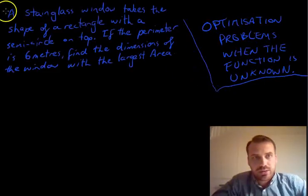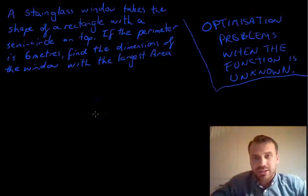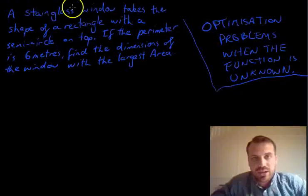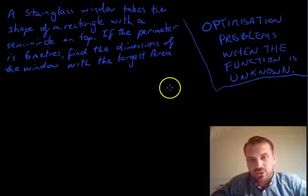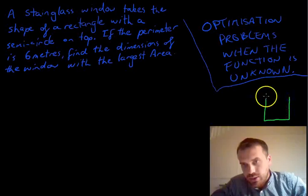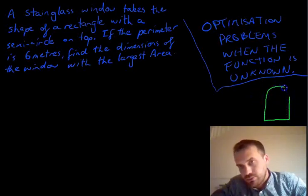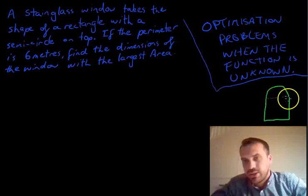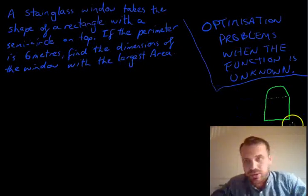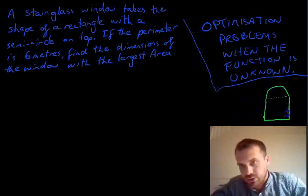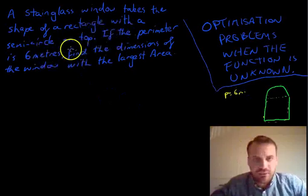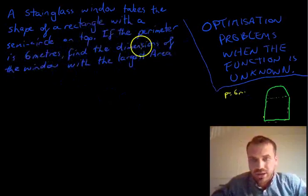Let's take a look at one. These questions are all very similar in certain ways. One of them is that you have to actually interpret the question itself. This is asking for a stained glass window that is in the shape of a rectangle with a semicircle on top. So that's a stained glass window that looks like this - rectangle with a semicircle on top. Now, it says if the perimeter is 6 meters, so all the way around that shape, along this, around the semicircle, along this, and down this, the perimeter equals 6 meters. Find the dimensions of the window with the largest area.